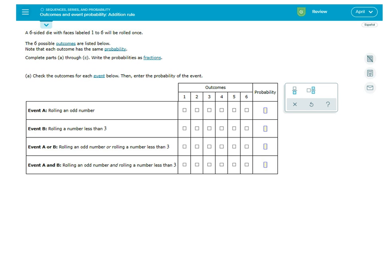This topic is outcomes and event probability. In this problem they're using a six-sided die, kind of like the die you roll in Monopoly. There are six faces labeled one through six and you're going to roll the dice. The six possible outcomes are listed below.